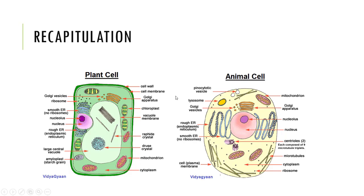We have also studied the difference between plant and animal cells. Cell wall is present in plant cells but absent in animal cells. Chloroplast is present in plant cells but absent in animal cells. Centrioles are present in animal cells but absent in plant cells. I hope today's lesson will help you understand the parts of cell, cell organelles, and the difference between plant and animal cells.